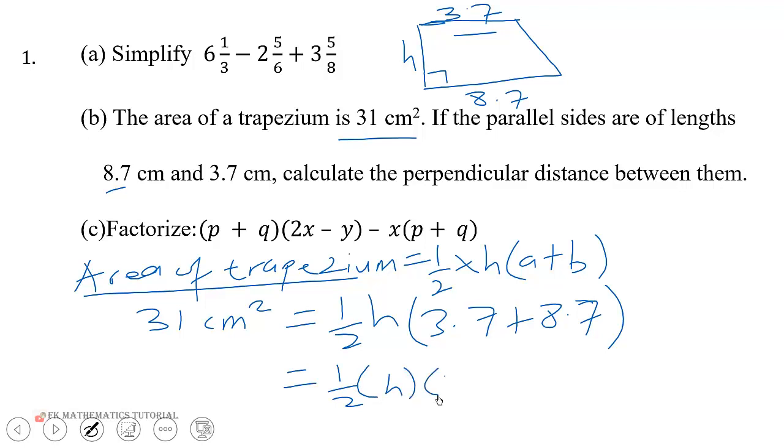The centimeters squared will cancel out. Now half of 12.4 will be 6.2, so we have 6.2h is equal to 31.